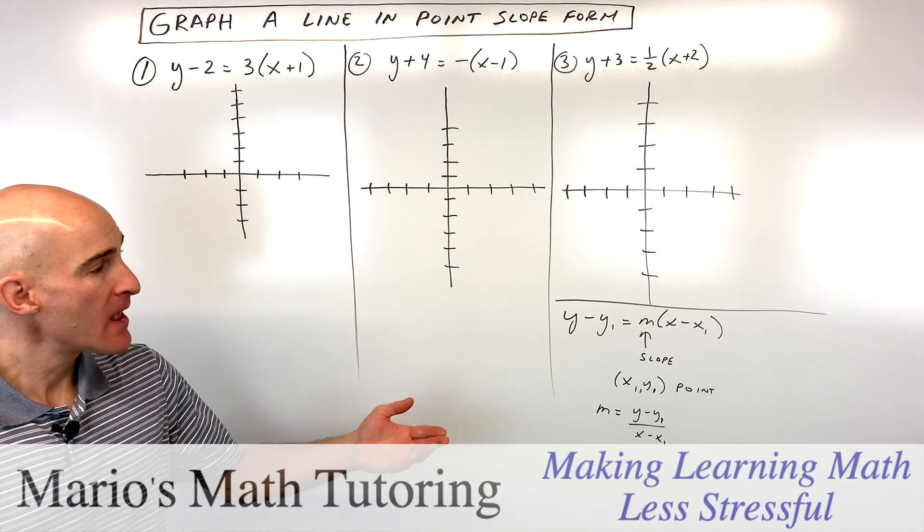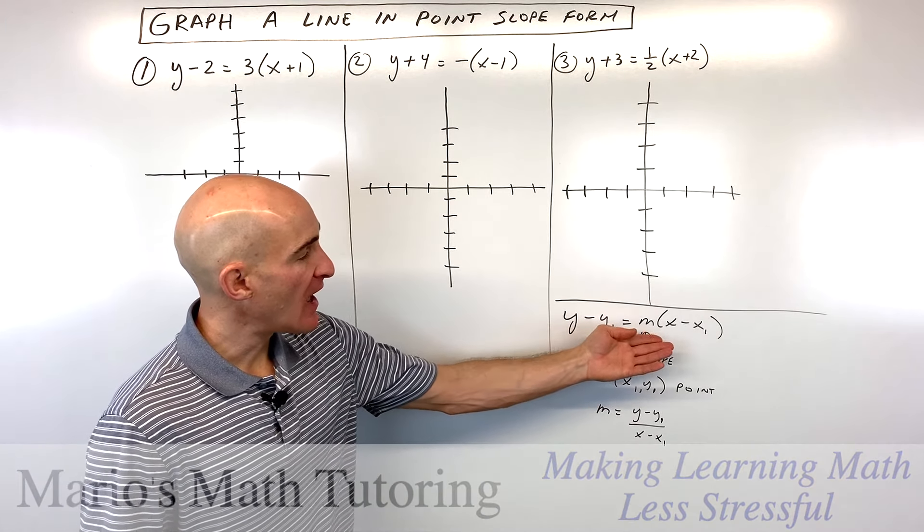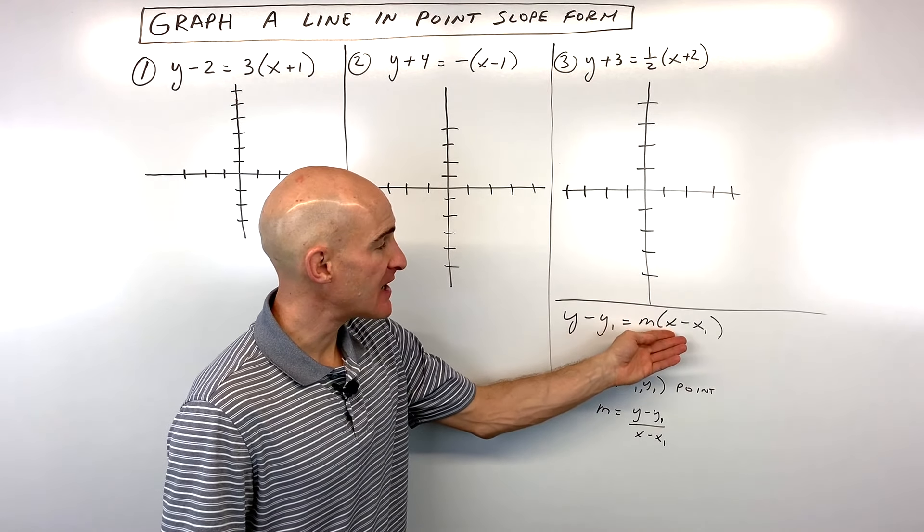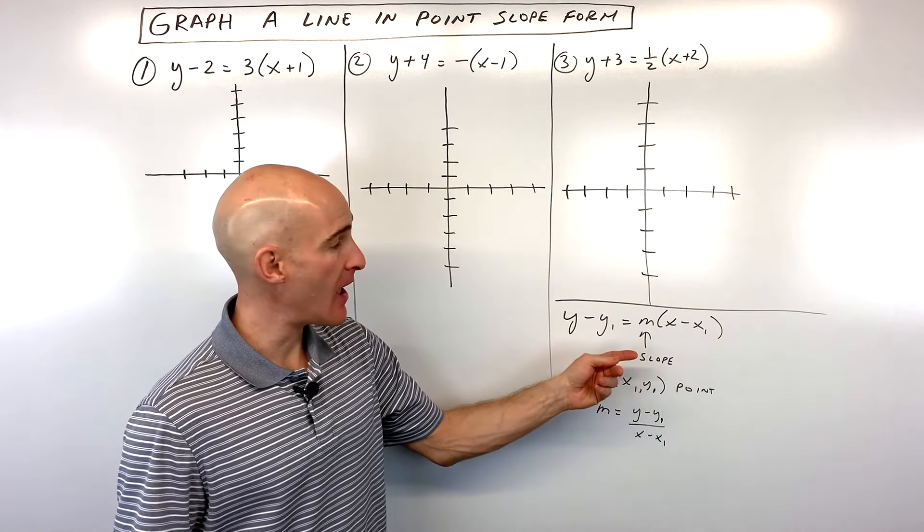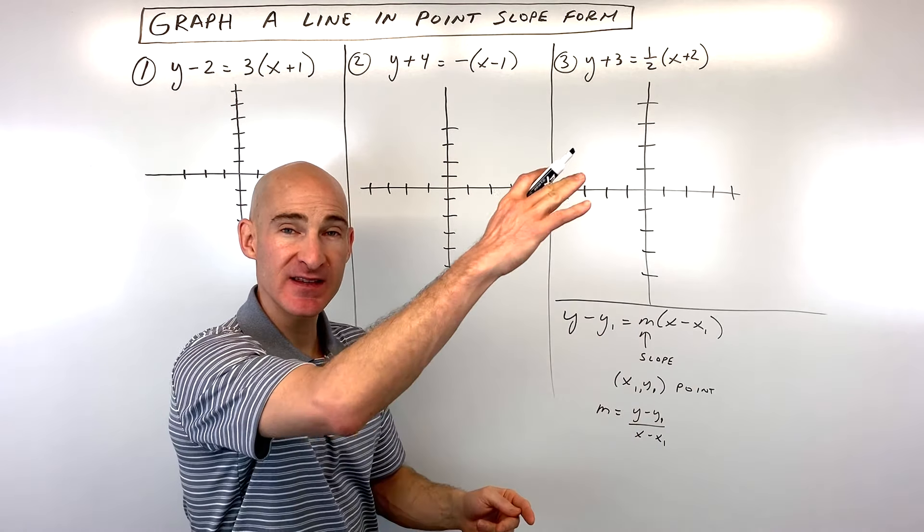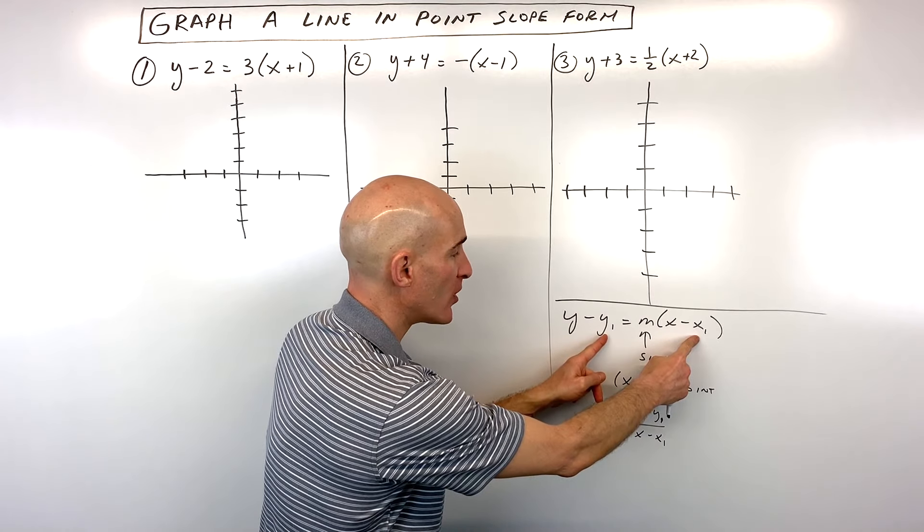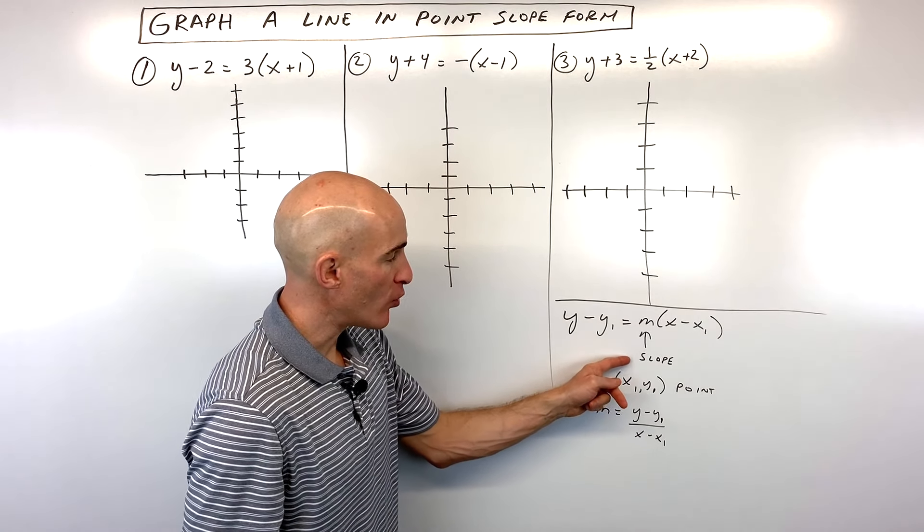So what exactly is point slope form? It's when you have an equation of a line that's written in this form: y minus y1 equals m times x minus x1. Now remember, m represents the slope, that's the angle of the line, and when it goes through a given point x1 comma y1. So that's our point, that's our slope.